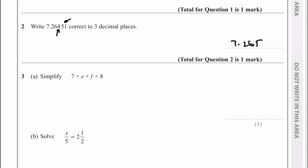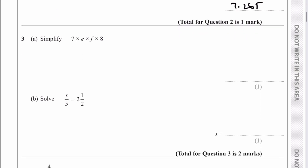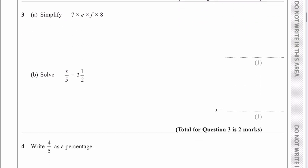Let's move on then to question number 3. We've got to simplify 7 times E times F times H. Let's look at the numbers first — 7 times 8 is going to be 56, and then I've got multiplied by E and multiplied by F.